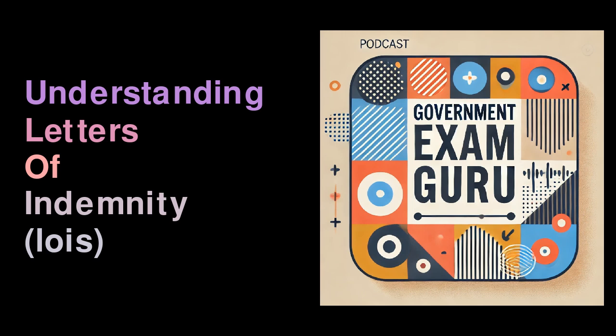For instance, when items of value are transported by a delivery service, an LOI is signed to ensure the owner is compensated for any loss, damage, or theft that occurs during transit. This is generally formalized before a bill of lading is issued.